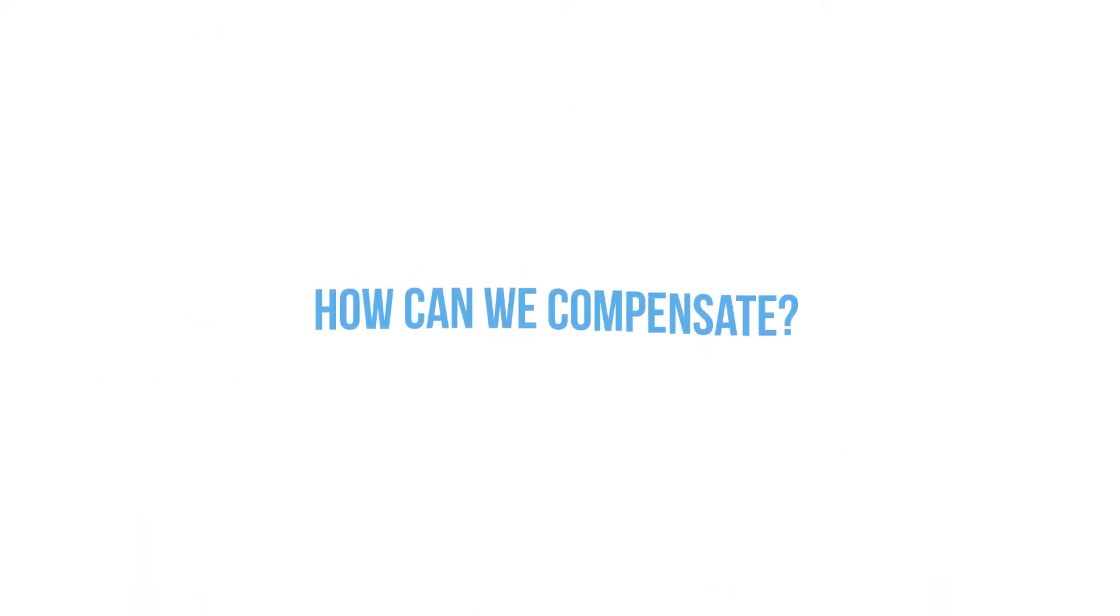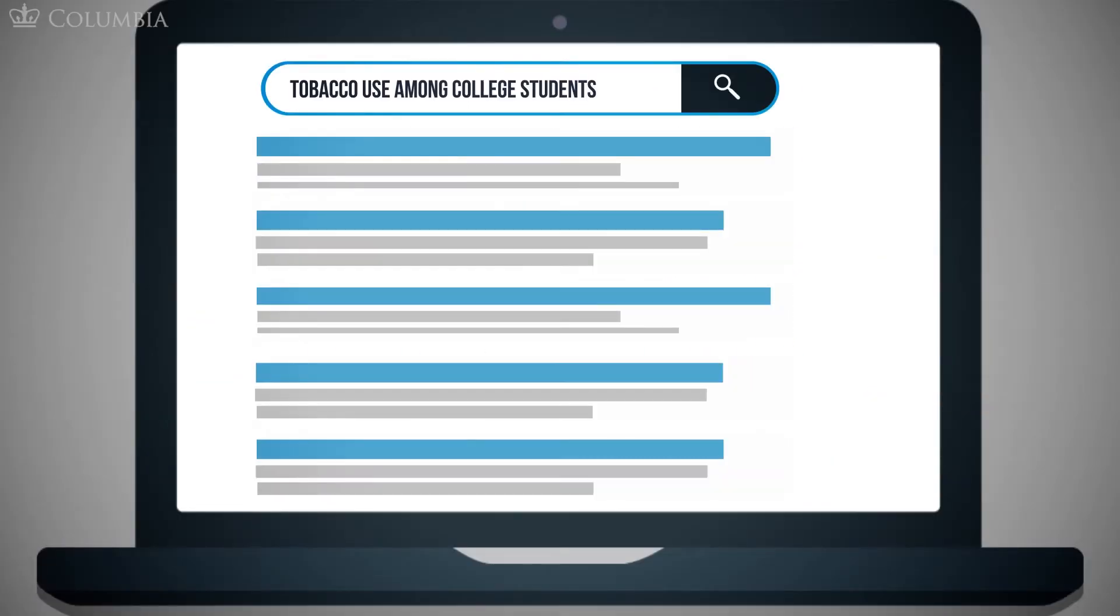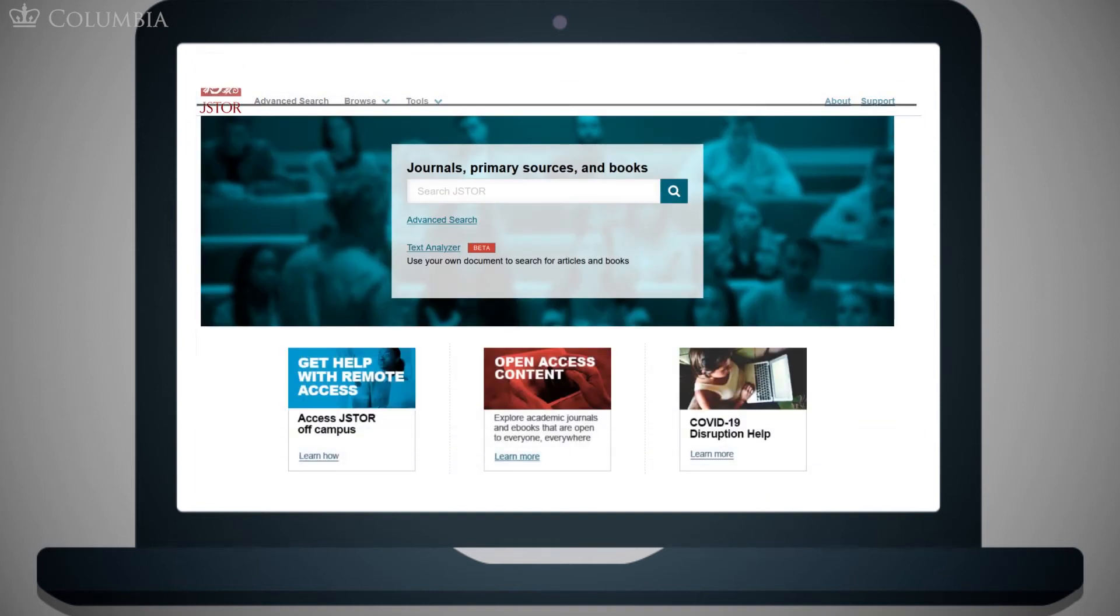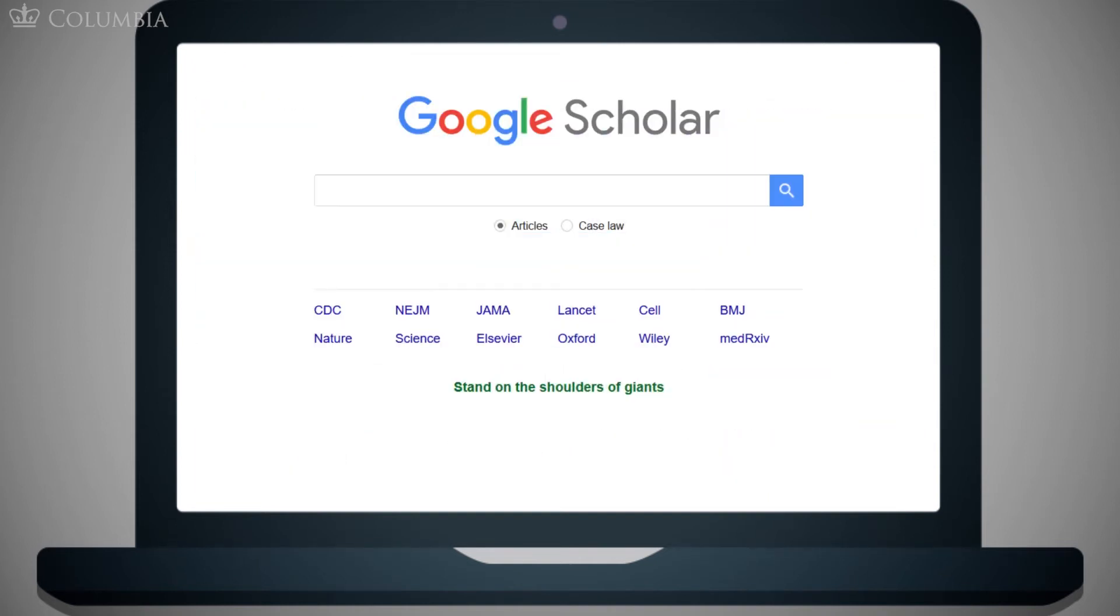So how can we compensate? Perform your search in multiple locations, such as the Columbia Libraries Catalog Clio, and at least one or two other databases such as JSTOR or ProQuest, or even perhaps Google Scholar, recognizing that each of these tools searches a sometimes overlapping but not identical set of sources.